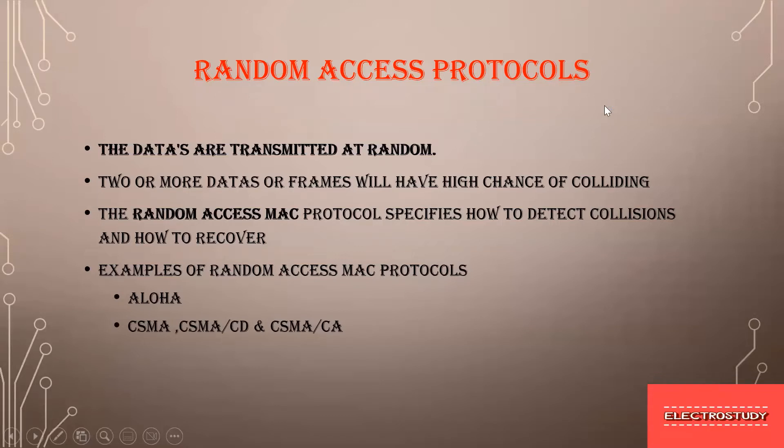Random access control is nothing but from the name itself, you can understand that the datas or frames that are formed in the data link layer are transmitted at random. If data is sent from the sender to the receiver, it is not 100% sure that the data is transmitted at regular intervals of time. As and when required, it randomly chooses the frames that are generated in the sender side. Because of randomly acquiring the data, there are high chances of collision of frames or data. You should have some protocol to detect how the collision is taking place and you have to obviously recover those collided data or frames.